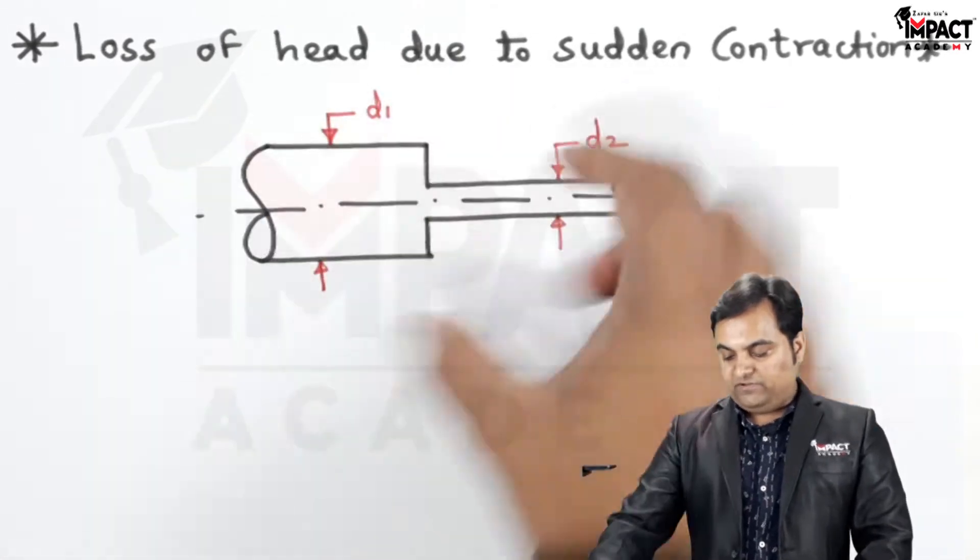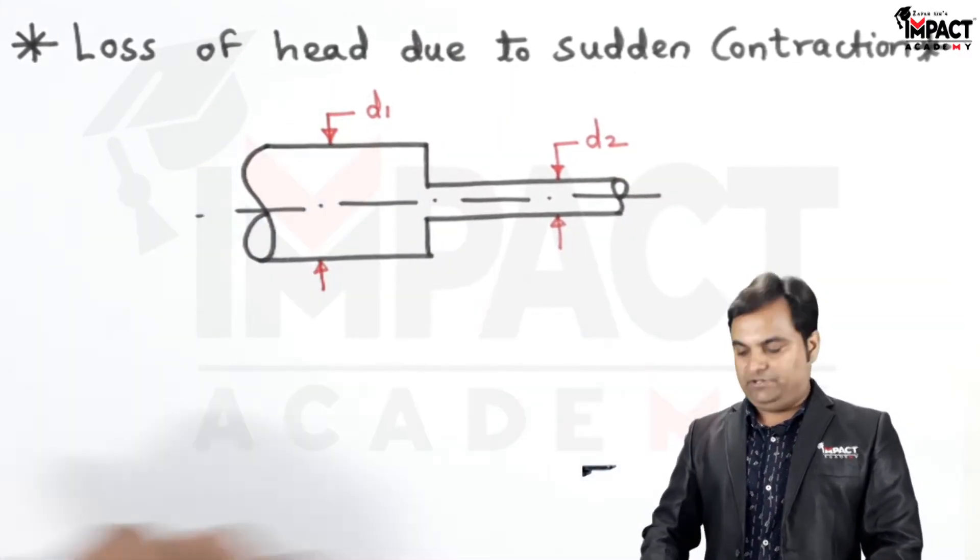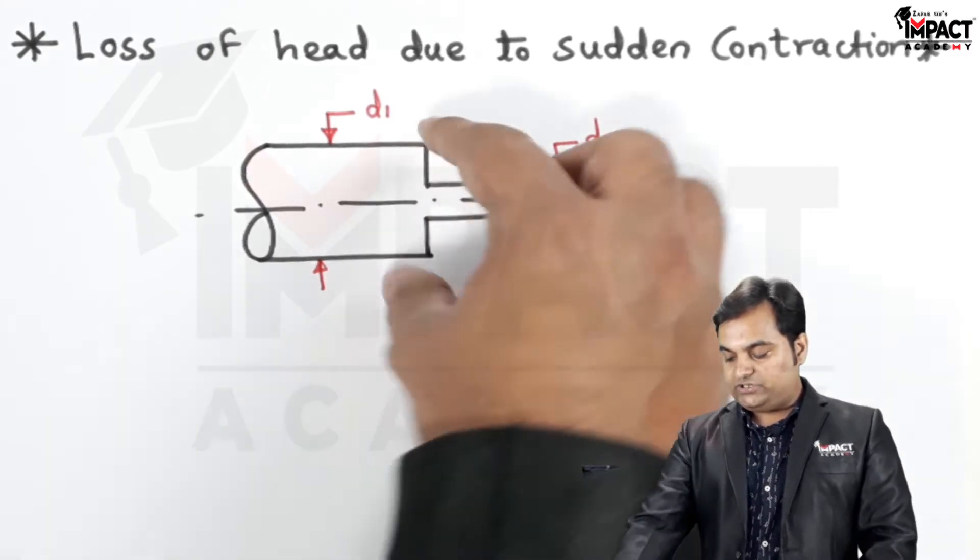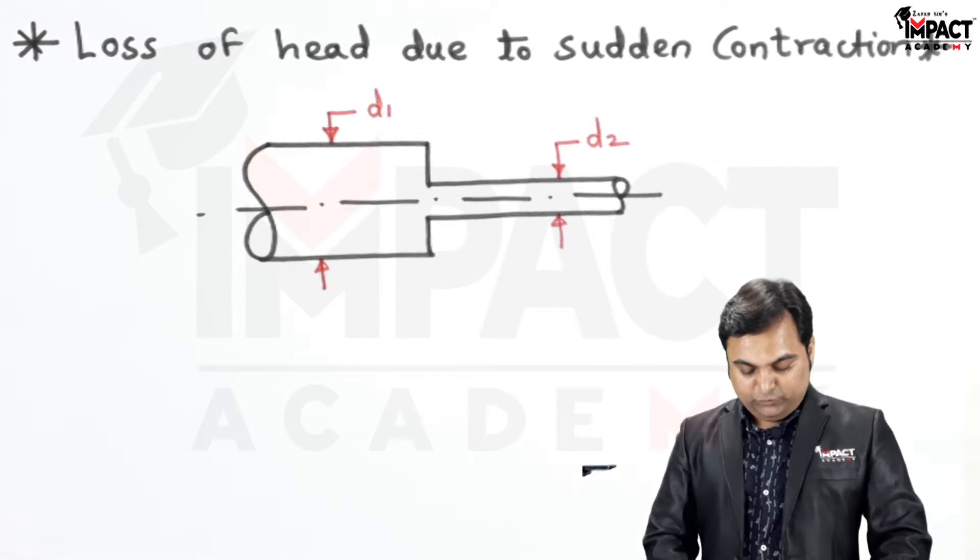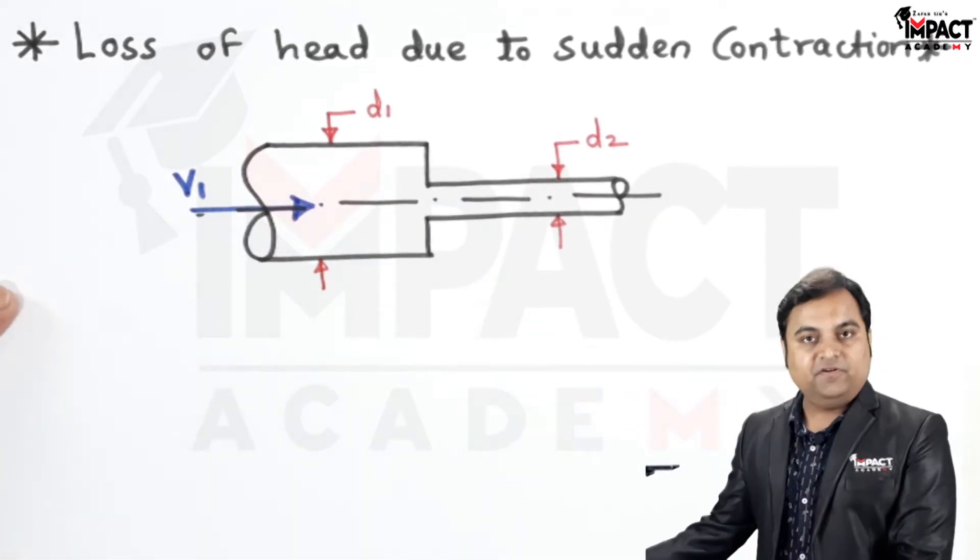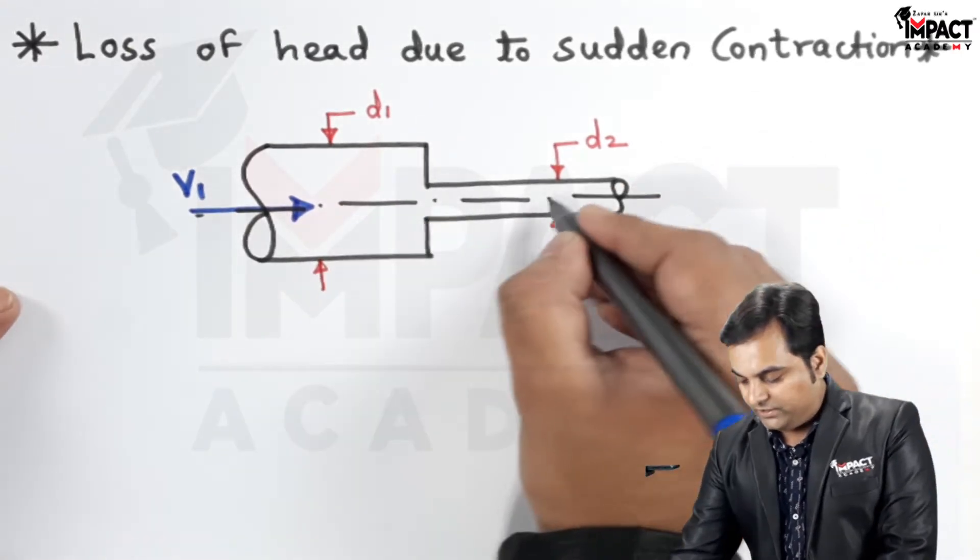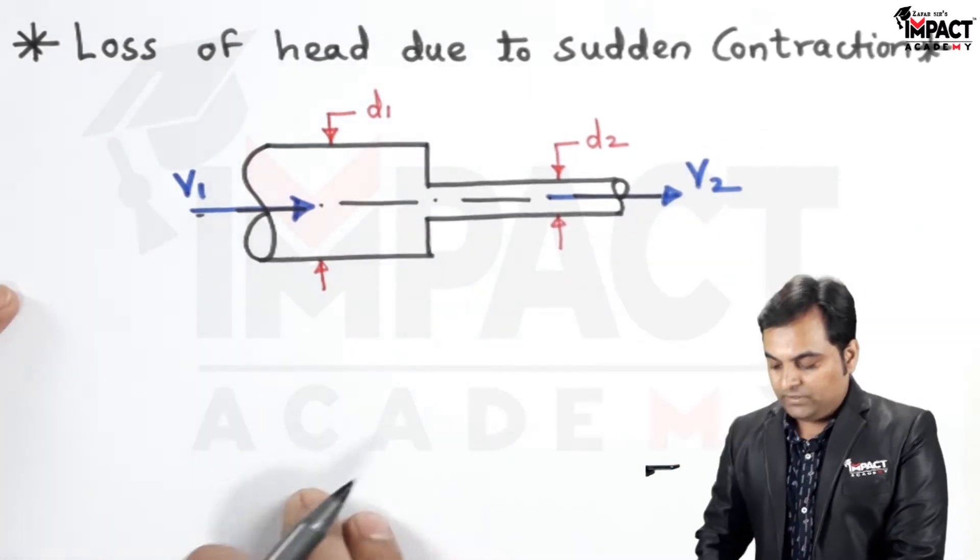Here there is a pipeline in which initially the diameter is D1, which is a bigger diameter, and then it reduces suddenly to diameter D2. The fluid is flowing having velocity V1 in section 1 or pipeline 1 and velocity V2 in section 2.